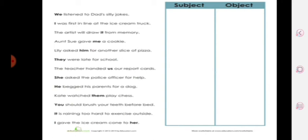Next is 'I gave the ice cream cone to her.' Here are two bold letters, 'I' and 'her.' 'I' is used as the subject, so we will keep it in the subject column, and 'her' is used as the object—it receives the action—so 'her' is the object pronoun.